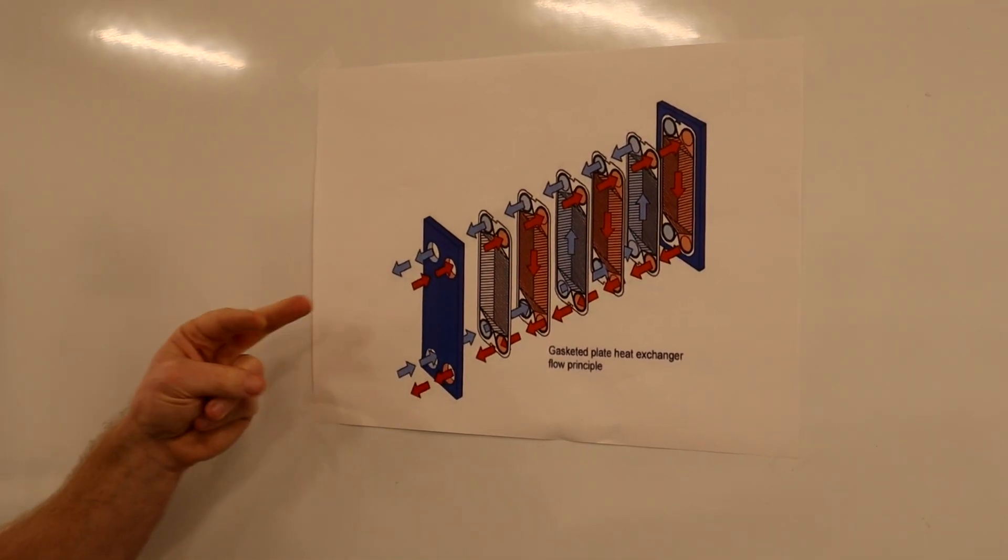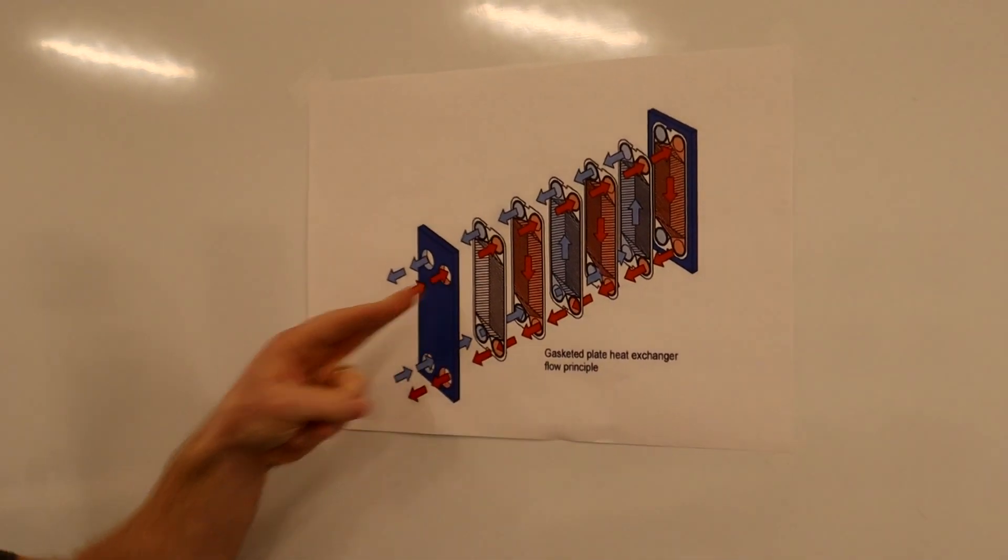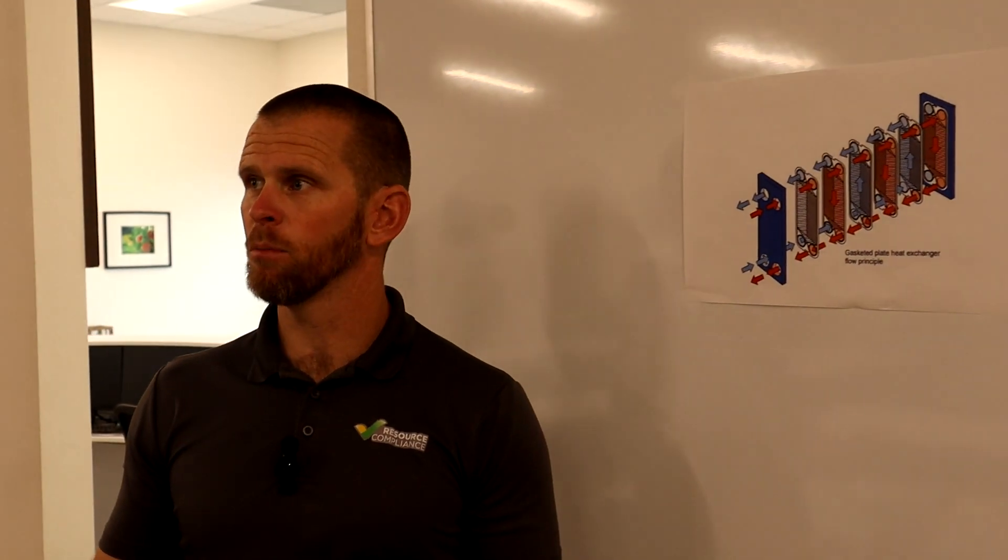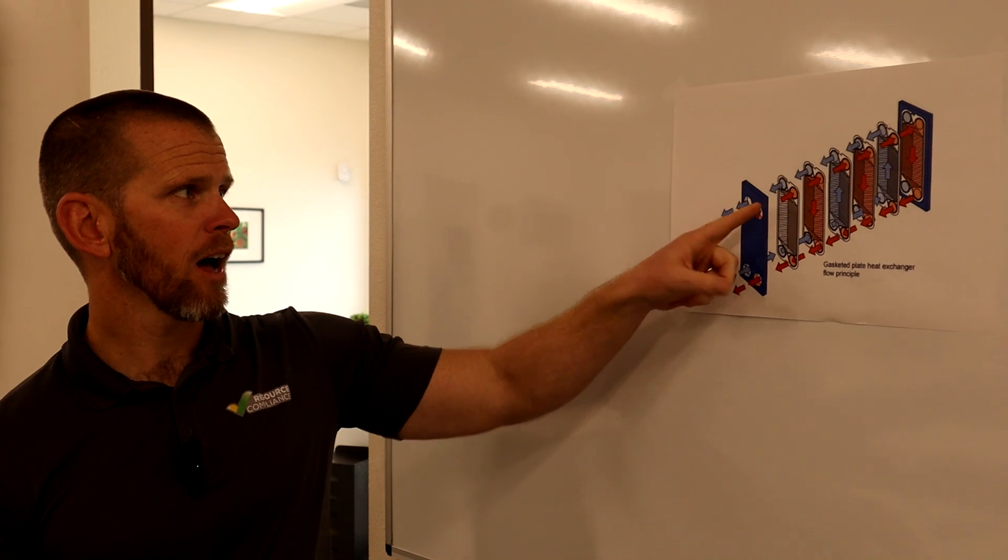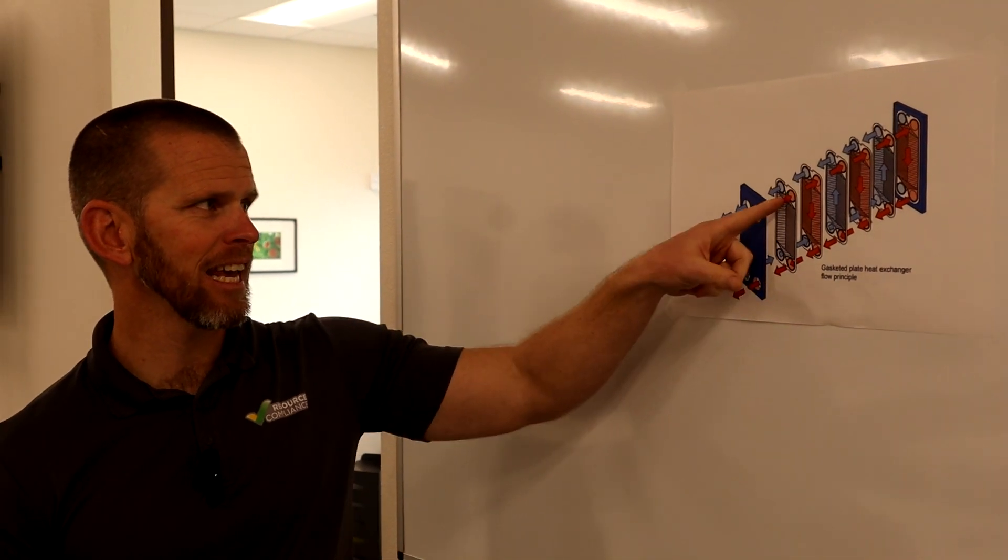This view is great because it shows it separated and then you can also see the black rings here around these openings. We have a warm fluid coming in, in the case of a condenser that would be our ammonia or refrigerant from the compressors entering the condenser.